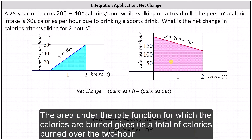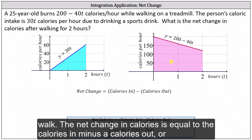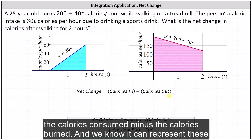The area under the rate function for which the calories are burned gives us the total calories burned over the two-hour workout. The net change in calories is equal to the calories in minus the calories out, or the calories consumed minus the calories burned.